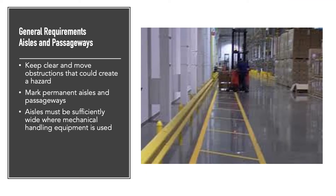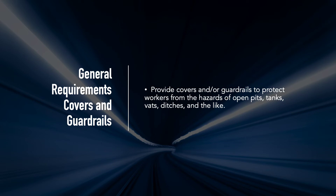Aisles and passageways should be kept clear — ensure there's a nice, dry, clean, wide area of egress. The width of aisles is actually determined by wheelchair accessibility requirements, so that people in wheelchairs can get from point A to point B. Keep those aisleways clear so that everybody can get where they're going.